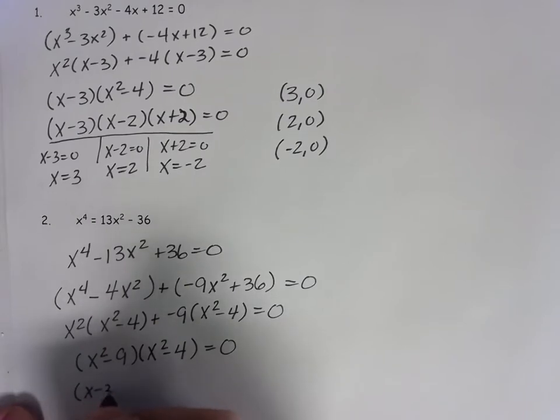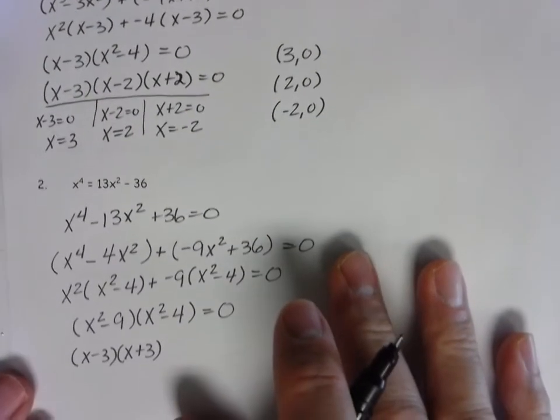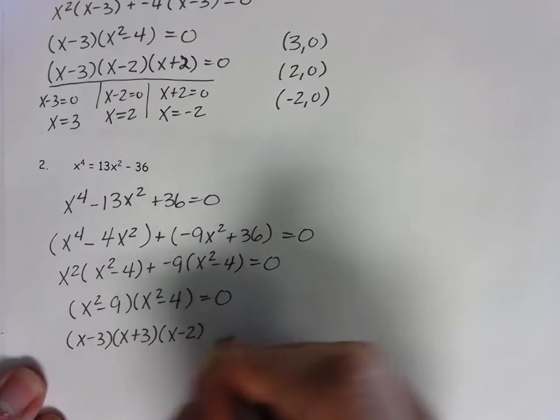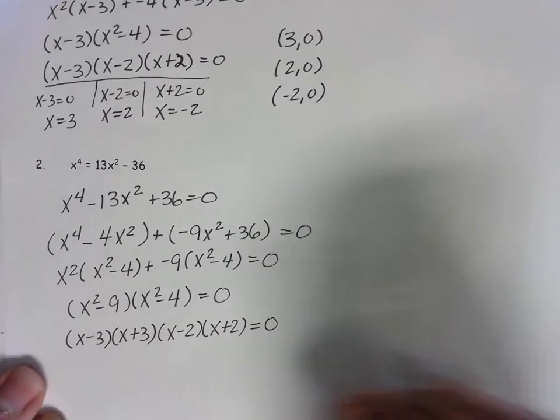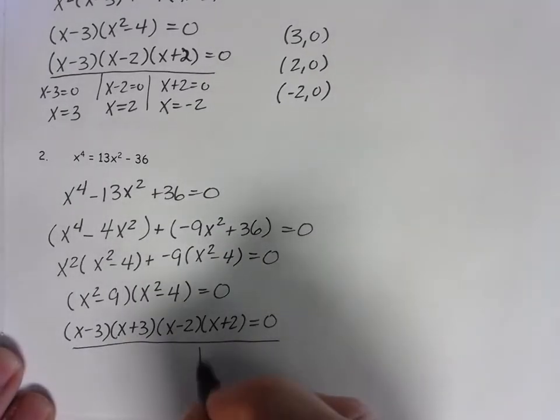x minus 3, x plus 3 will be how your difference of perfect squares breaks down. x minus 2, x plus 2 will be how your 2nd difference of perfect squares breaks down. Throw your t in here.